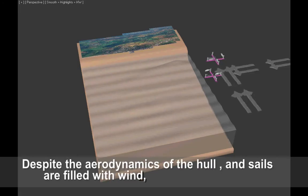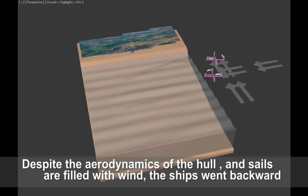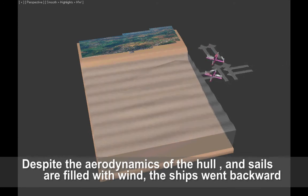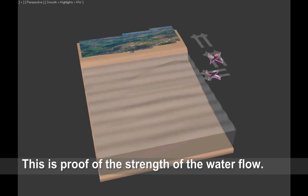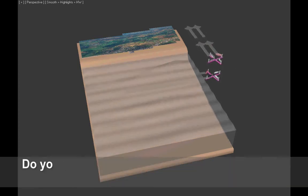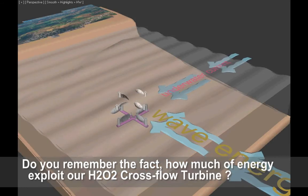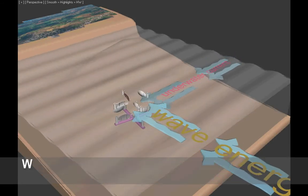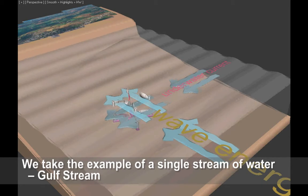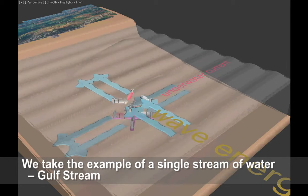Despite the aerodynamics of the hull and sails are filled with wind, the ships went backward. This is proof of the strength of the water flow. So do you remember the fact how much of energy exploit are H202 cross flow turbine? We take the example of a single stream of water, Gulf Stream.